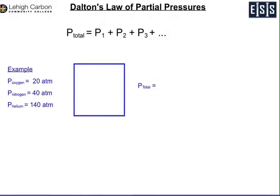On the slide, that's represented by the equation P_total equals P1 plus P2 plus P3, depending on how many gases you have in your container. For a quick example, say you have a container with oxygen, nitrogen, and helium in it.